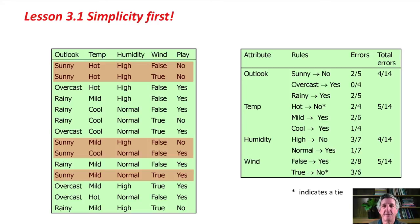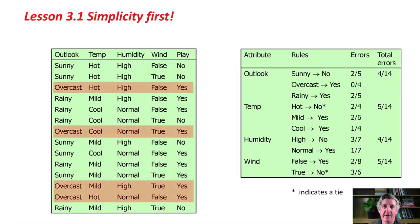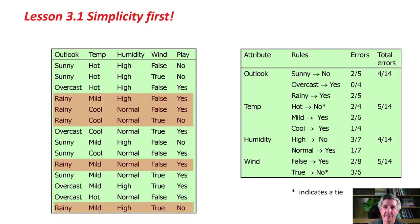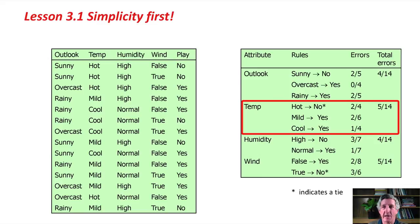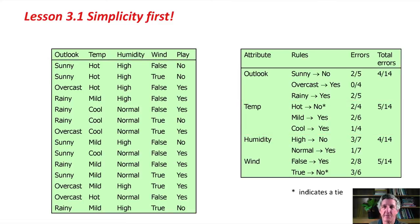For overcast, all four overcast instances lead to yes values for the class play. So we choose: if outlook is overcast, then yes, giving zero errors. For rainy, we also choose yes, giving two errors out of five instances. So the total errors branching on outlook is four. We can also branch on temperature: when hot, there are two noes and two yeses — we break the tie and predict no, getting two errors. If temperature is mild, predict yes for two out of six errors. If cool, predict yes for one out of four errors.